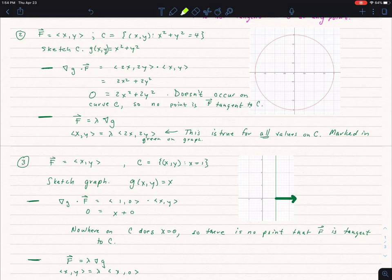However, I can see if it is parallel to that gradient. And again, if I have x, y equaling some constant times 2x, 2y, I find that no matter what x and y is, there's always going to be a constant that makes that true. So that means that F is tangent to the curve C at every single point along that curve. So I've just drawn a couple of examples.